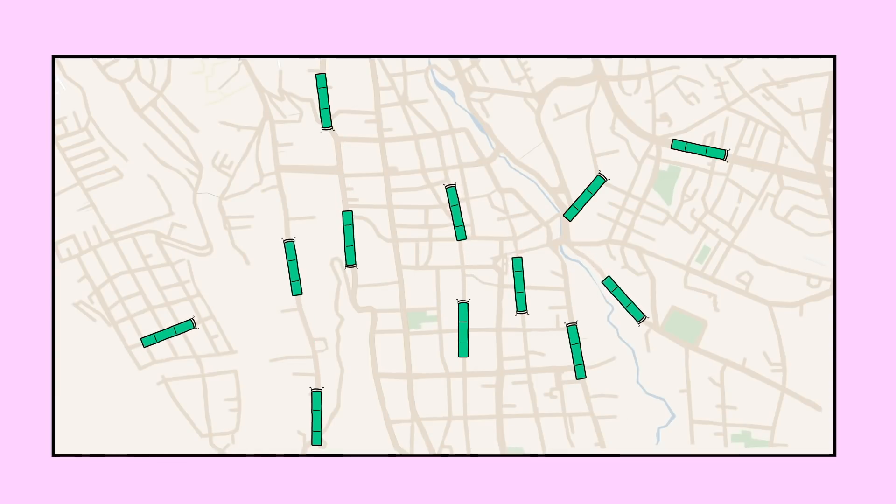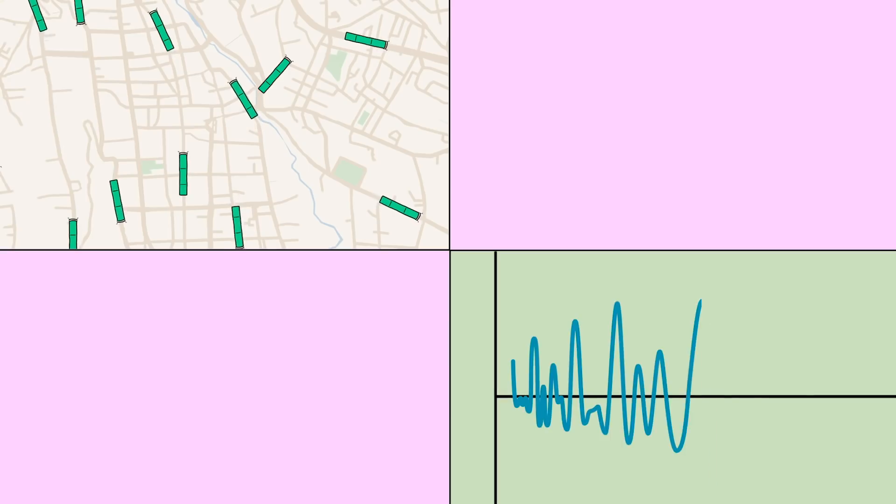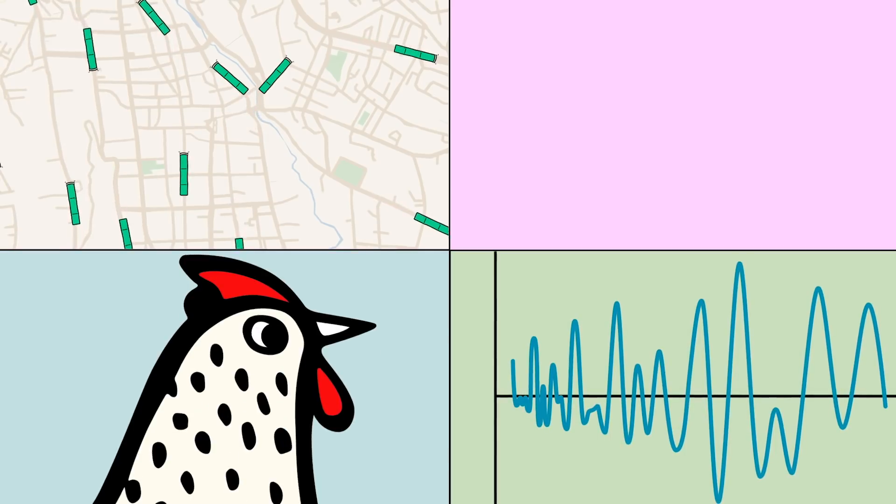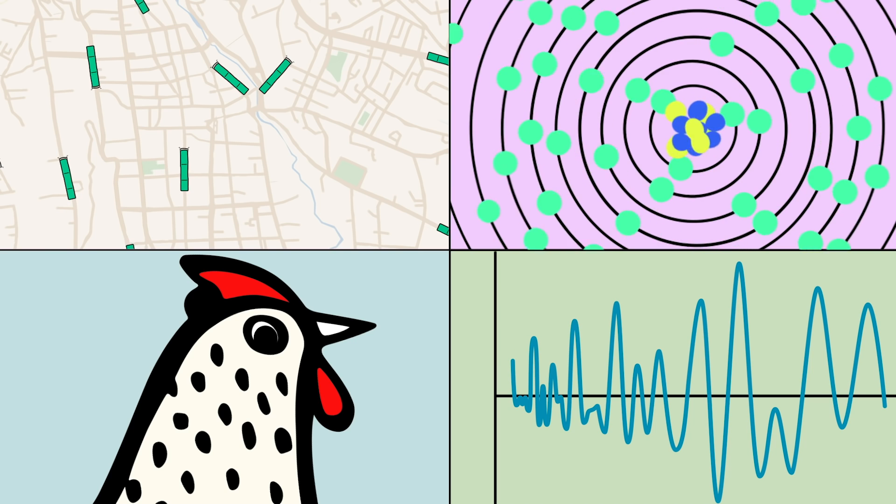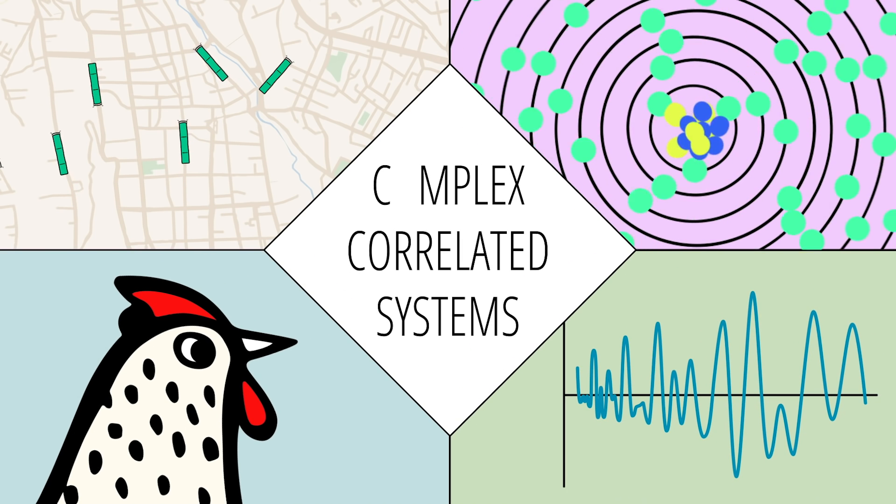In that case, the spacing between buses is defined by a very different probability distribution. The Cuernavaca bus system, the Riemann zeta function related to prime numbers, chicken retinas, and atomic nuclei are all examples of complex correlated systems.